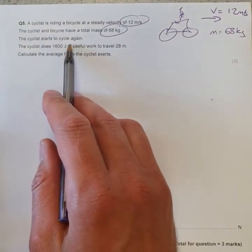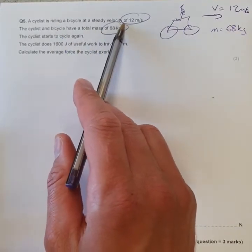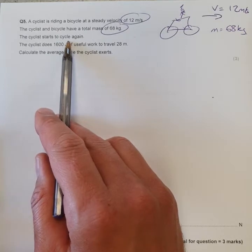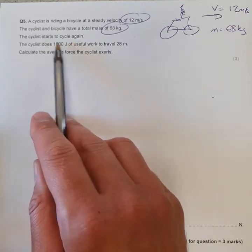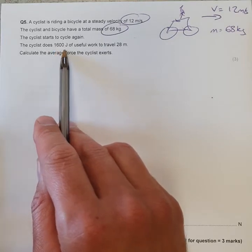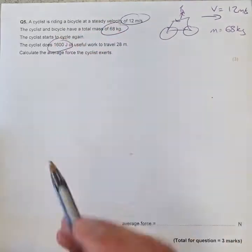The cyclist starts to cycle again. I don't quite get this question because they were cycling - it doesn't say they've stopped and started to cycle again, so I'm not too sure about the wording of that question. The cyclist does 1600 joules of useful work to travel 28 meters.